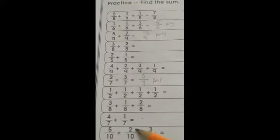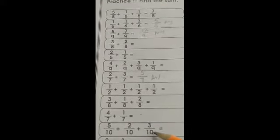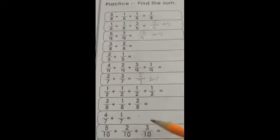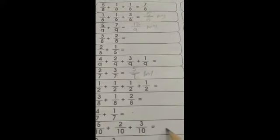Now let's move further. The next question is: 5 upon 10 plus 2 upon 10 plus 3 upon 10. When the denominator is the same you know these are like fractions, so we simply add. Write 10 as the denominator. Now add 5 plus 2: keep 5 in mind, count — 6, 7; that gives 7. Then 7 plus 3: count — 8, 9, 10. Write 10 over there. This is your answer.